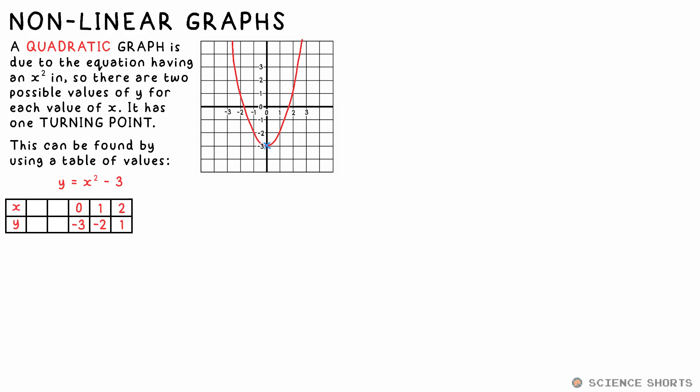When x is one, y is minus two. When x is minus one, y is two. Again, this is a quadratic function. Therefore, any value of y is a result of two possible values of x.